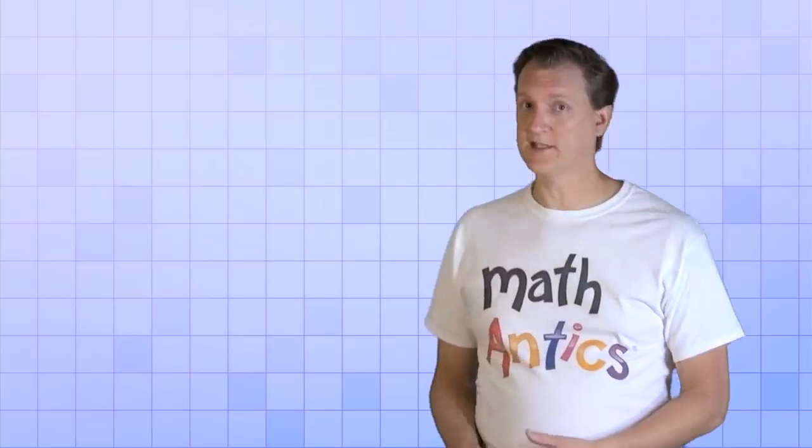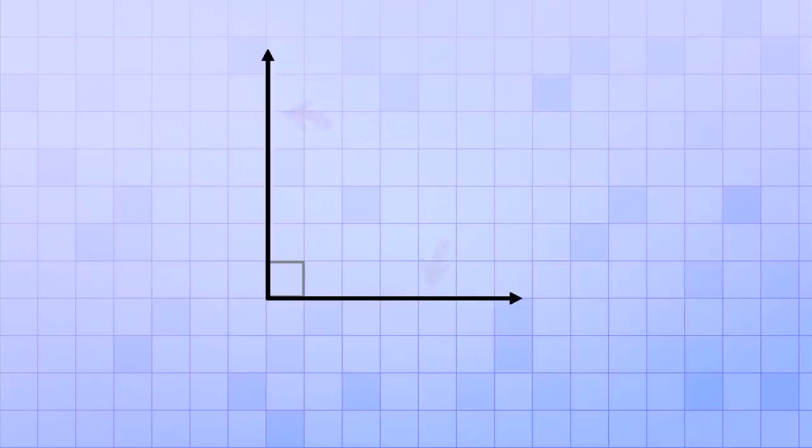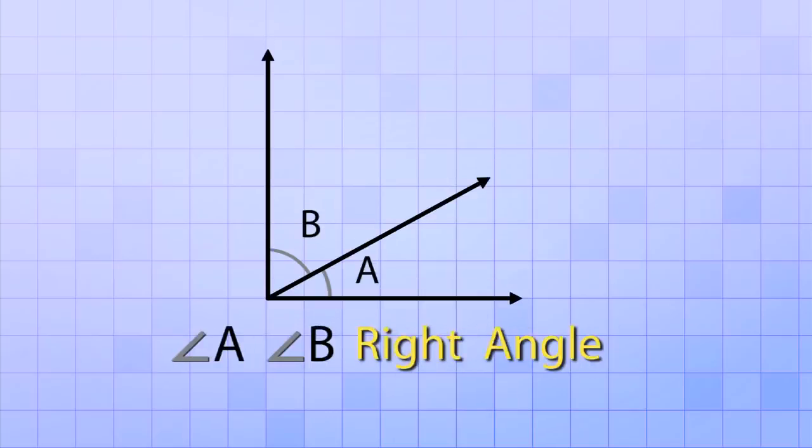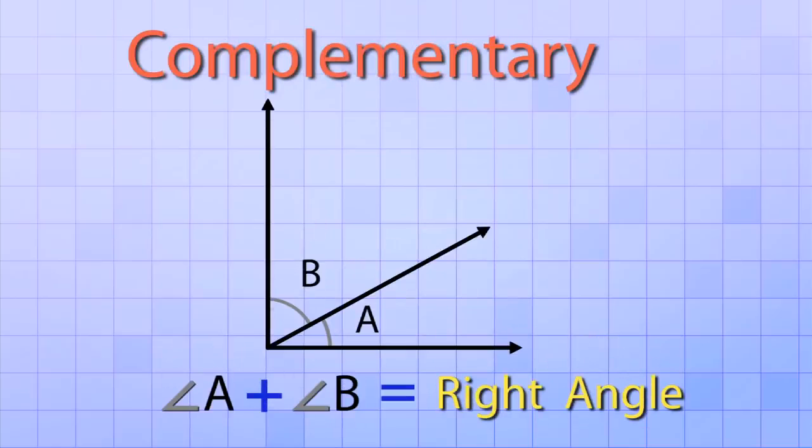Alright then, there's just a few more important geometry terms that we need to learn in this video. Let's look at our simple right angle again that's made from two rays. But this time, let's draw a third ray that cuts that right angle into two smaller parts. Now because the angle that we divided up was a right angle, we know that the two smaller angles combine to form a right angle. And in geometry, any two angles that combine to form a right angle are called complementary angles.